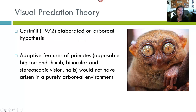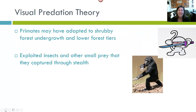The second hypothesis is the visual predation theory. Matt Cartmill in 1972 elaborated on the arboreal hypothesis of Wood Jones. Cartmill argues that adaptive features of primates — such as an opposable big toe and thumb, binocular vision, stereoscopic vision, and flat nails — would not have arisen in a purely arboreal environment. According to Cartmill, primates adapted to shrubby forest undergrowth and lower forest tiers where they exploited insect prey and other small prey captured through stealth. It was through this stealthy foraging strategy that primates developed all the anatomical characteristics that distinguish them from other mammals.